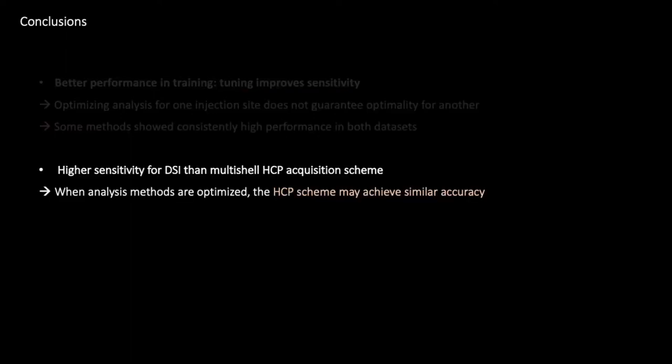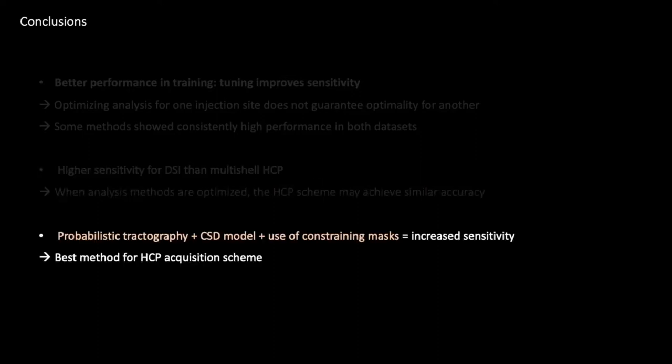The DSI acquisition scheme led to higher accuracy overall. However, it's worth noticing that when analysis methods are optimized, the HCP acquisition scheme may achieve similar accuracy as a more demanding acquisition scheme. A combination of probabilistic tractography, constraint spherical deconvolution, and the use of additional masks to constrain tractography provided the highest sensitivity values and also resulted in the best method for the HCP acquisition scheme.